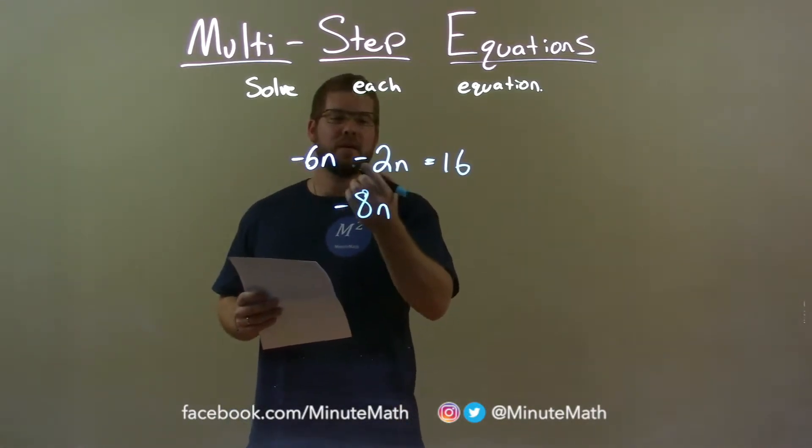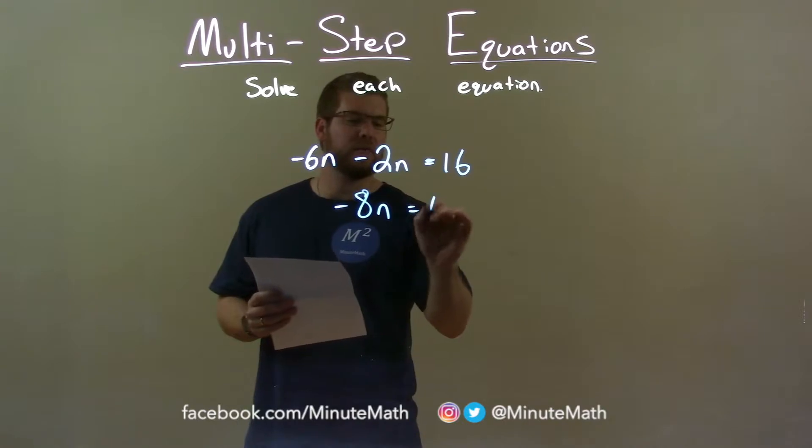Remember, subtracting is the same thing as adding a negative. So negative 8n equals 16.